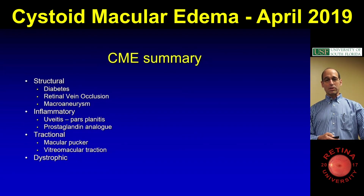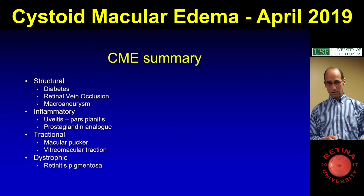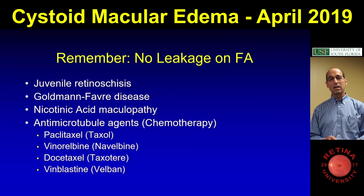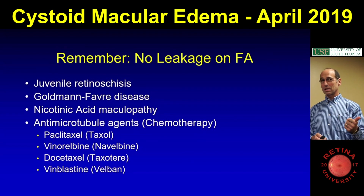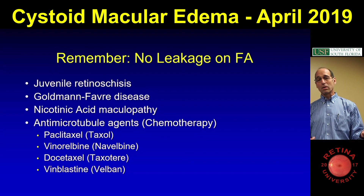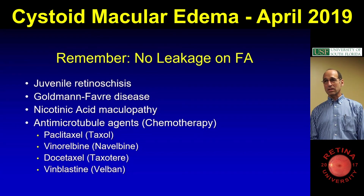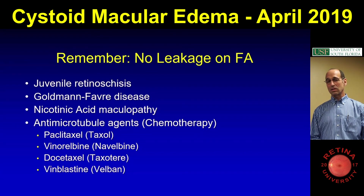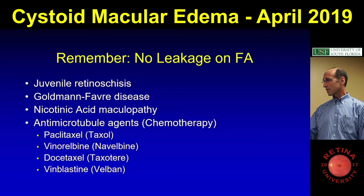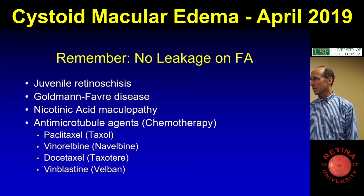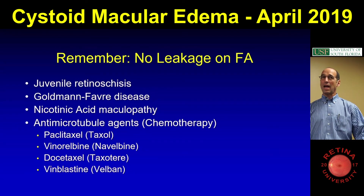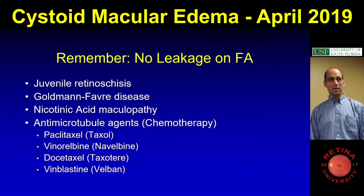In summary, there are four things you should remember: structural, inflammatory, tractional, and dystrophic for any time you see macular edema. For no leakage on FA, just remember the top three: juvenile retinoschisis, Goldman-Favre, and nicotinic acid. I see nicotinic acid and juvenile retinoschisis all the time. The chemotherapy antimicrotubule agents could be added, but knowing that a patient on Taxol has non-leaking fluorescein seems a little harsh to expect.